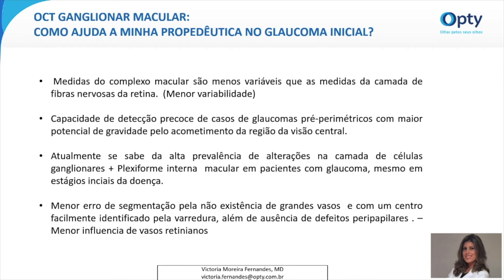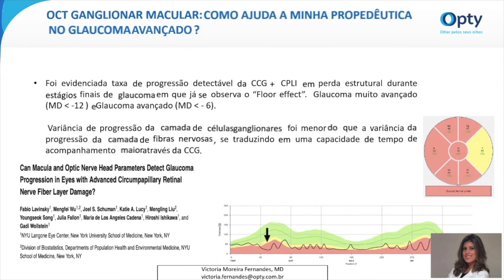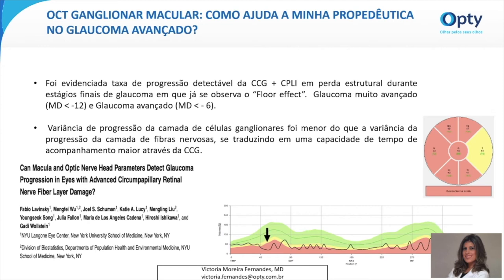E como o OCT ganglionar macular pode ajudar a propedêutica nos casos de glaucomas avançados? São justamente nos casos avançados de glaucoma que os estudos mostram o maior nível de evidências do benefício da avaliação do complexo macular de células ganglionares e plexiforme interna. Conforme publicado em 2018 por Fábio Lavinsky, foi evidenciada uma taxa de progressão detectável da camada de células ganglionares e plexiforme interna em pacientes com perda estrutural durante estágios finais de glaucoma em que já se observava o efeito floor, mesmo naqueles glaucomas muito avançados com MD menor que -12 e glaucomas avançados com MD menor que -6. Mais recentemente, o Dr. Carlos Gustavo de Moraes, ao publicar sua tese de doutorado, corrobora esses achados encontrados por Lavinsky, mostrando uma variância de progressão da camada de células ganglionares menor do que a variância da progressão da camada de fibras nervosas, traduzindo-se em uma capacidade e tempo de acompanhamento maior através das medidas da camada de células ganglionares maculares.